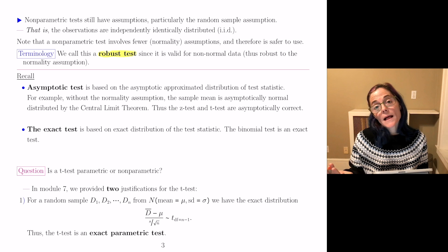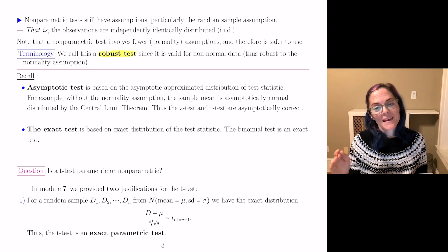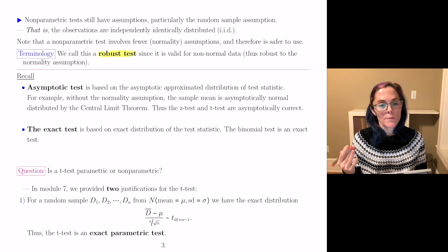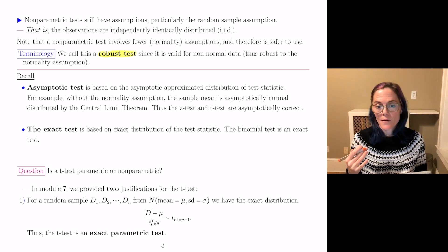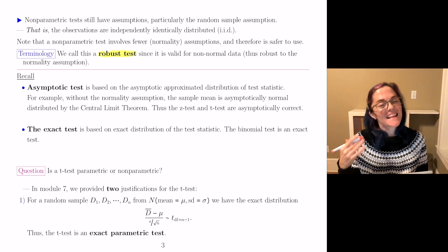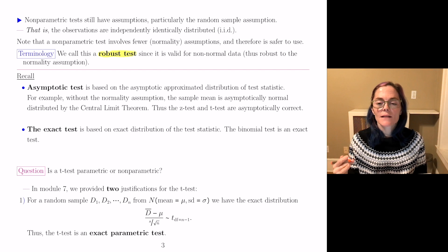For example, if we do not have a normality assumption, sample mean is asymptotically normally distributed using central limit theorem. So the z-test and the t-test are asymptotically correct.